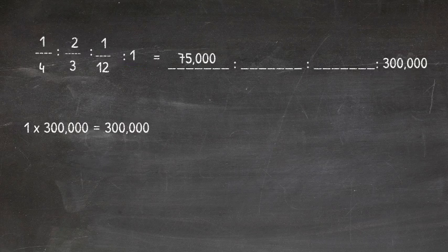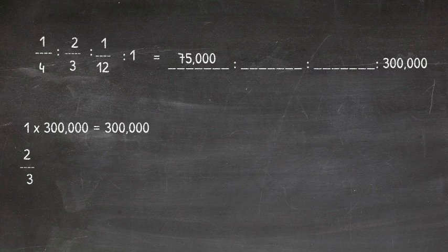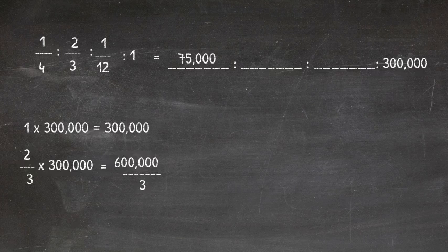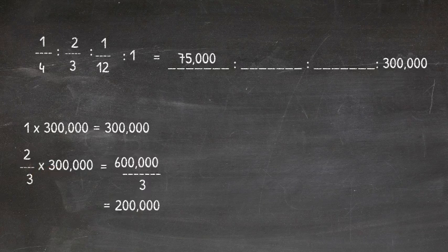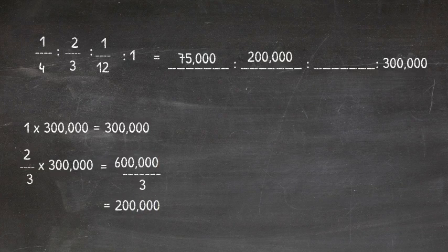We'll calculate the amount of money for the other two beneficiaries using the exact same process. Two-thirds times 300,000. So two times 300,000 is 600,000, three times invisible one is three. This gives us 600,000 over three. We do that final division, and that gets us a quotient of $200,000.